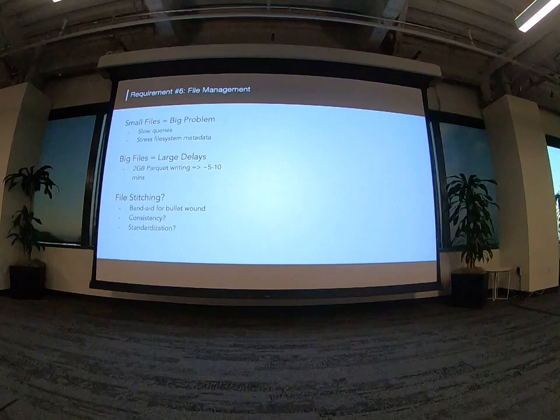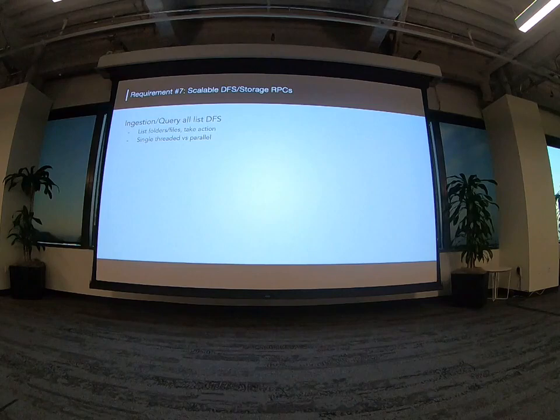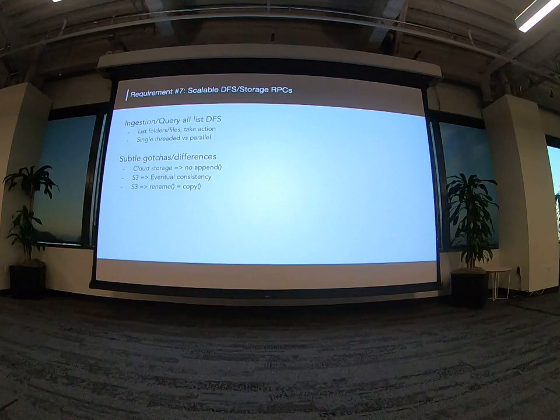Writing larger files is easier said than done — you need to balance trade-offs carefully. People often say 'let's compact the files,' but that's a band-aid because you end up writing small files anyway, exposing them to queries, and then later coming back to rewrite them. This process is not very consistent or standardized, and this is what you have to deal with to scale to multi-petabyte data. Your ingestion and queries need to talk to DFS, you have to list folders carefully — single-threaded vs multi-threaded — and there are gotchas: no append in cloud stores, eventual consistency, renames that are actually copies, and large directory listing challenges.